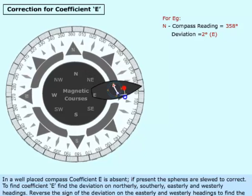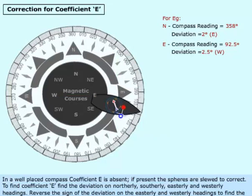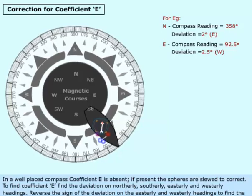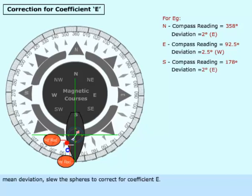To find coefficient E, find the deviation on northerly, southerly, easterly, and westerly headings. Reverse the sign of the deviation on the easterly and westerly headings to find the mean deviation, then slew the spheres to correct for coefficient E.